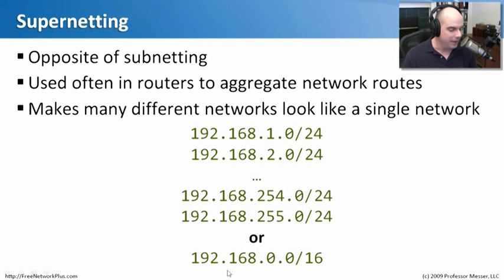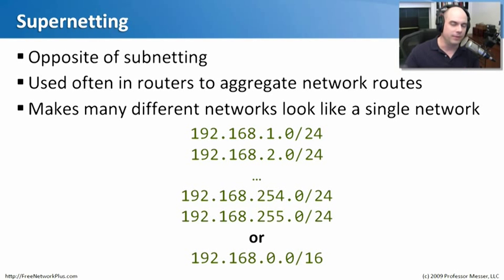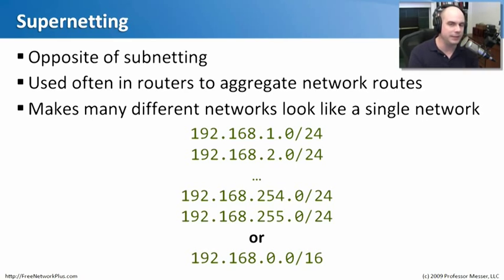Instead of having many routing entries, you can supernet and say to the router: if you need to go to anything that's 192.168 with a 16-bit subnet, just go out that one link. You've taken over 250 routing lines in a routing table and shrunk them down to one. That makes your routers much more efficient. As you move up the scale in your routing, you'll find that you do a lot of supernetting to consolidate networks into one single line.